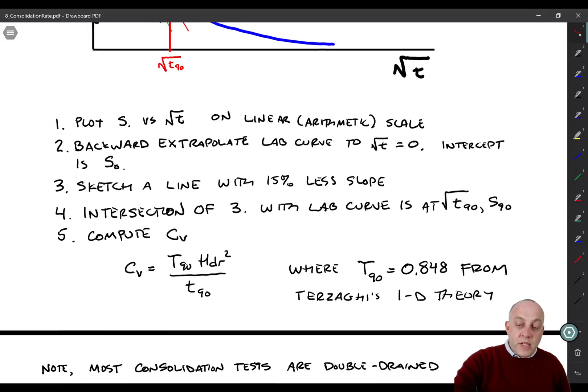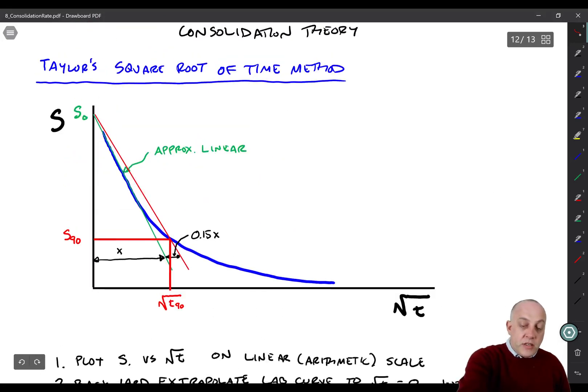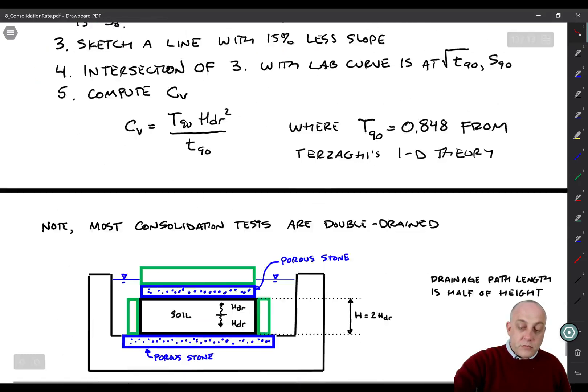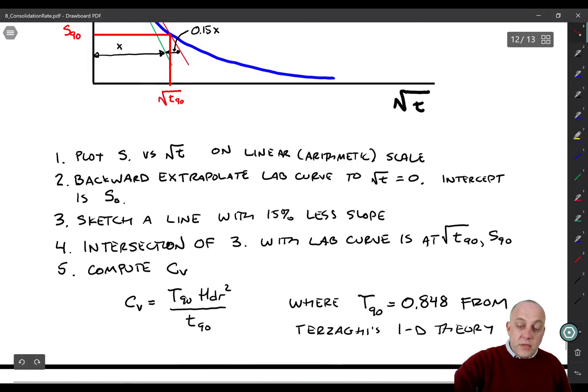And I forgot to mention, in order to get the initial reading, you have to backward extrapolate that green line to where it intersects 0 on the x-axis. Then we do C sub V using the same equation, except now we're using t90 instead of t50. And capital T90 is 0.848 from Terzaghi's one-dimensional consolidation theory.